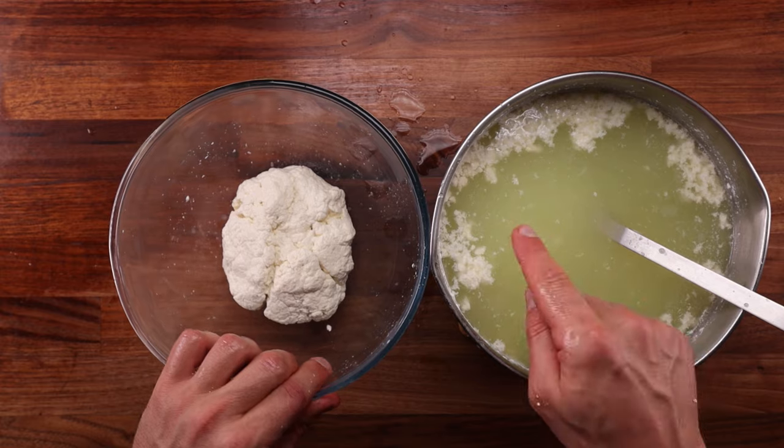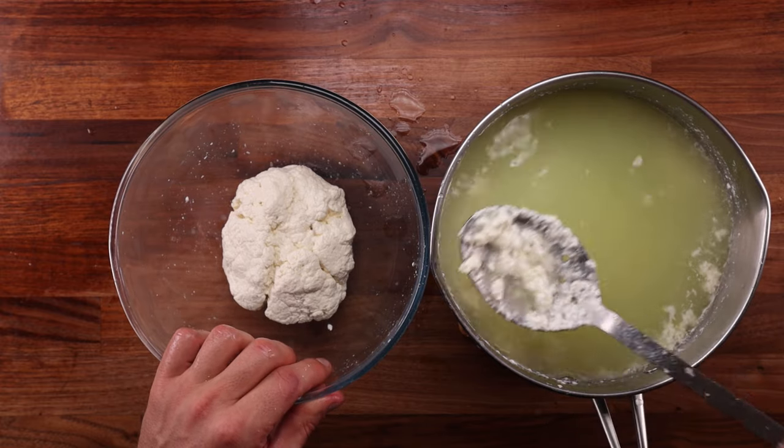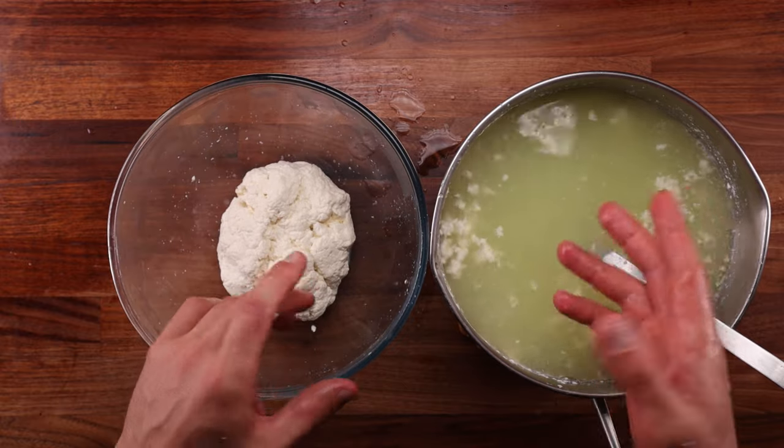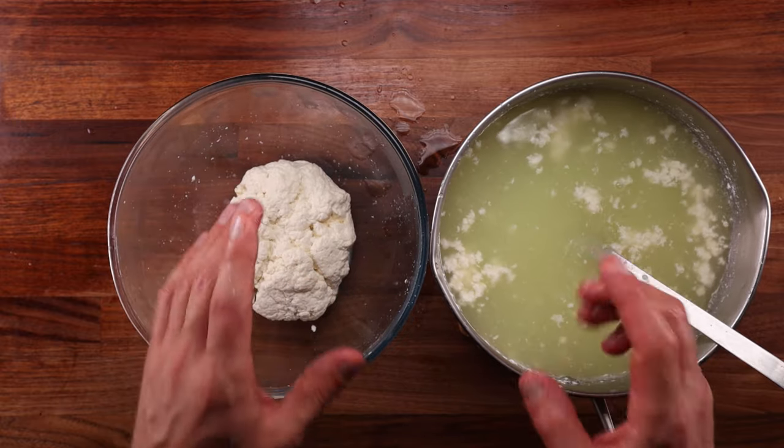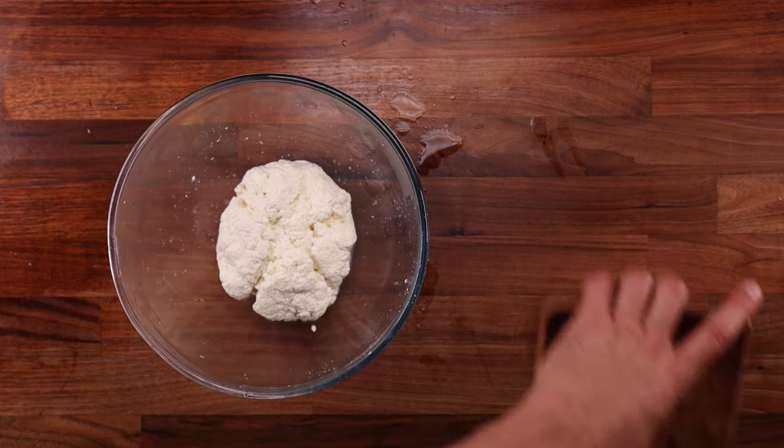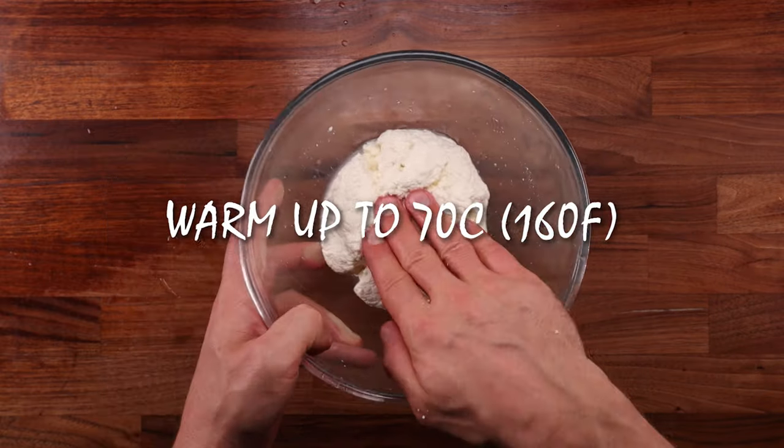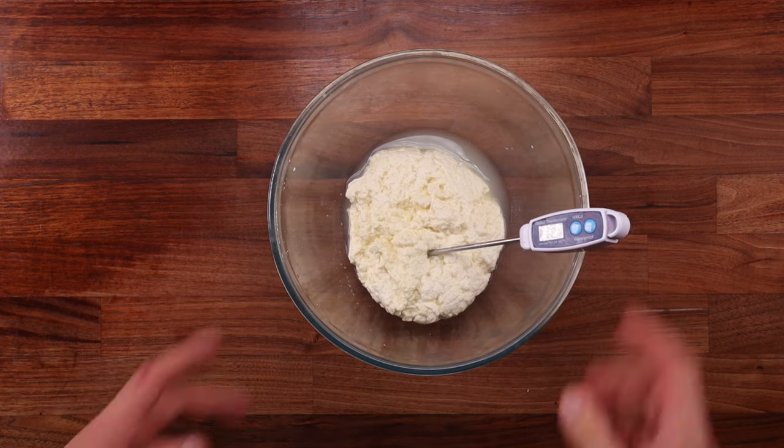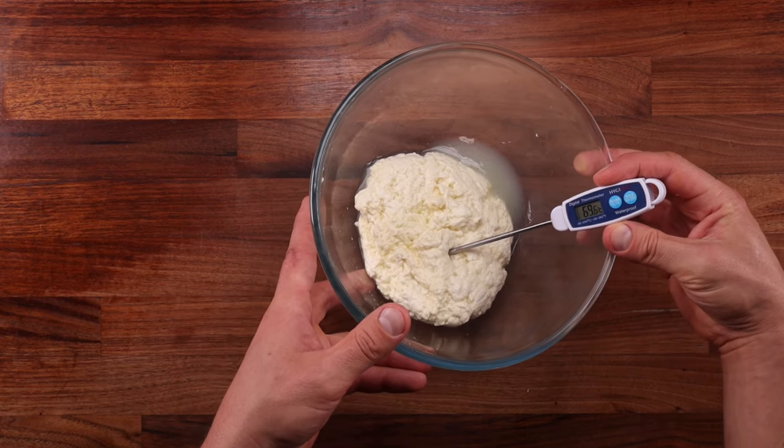Now, we must reheat the curd and you have two options. You can either reheat the whey and place the curd back into the whey and let it sit there for a while. But that is slightly messier and quite a lot more time-consuming. A great alternative is using the microwave. Just blast the curd for 30 seconds at a time and get it up to 70 degrees Celsius or 160 degrees Fahrenheit. This will essentially melt the cheese together and will make it nice and stretchy too.